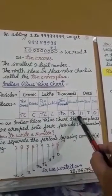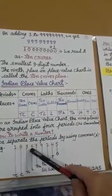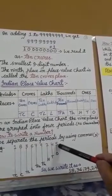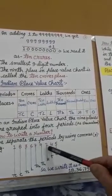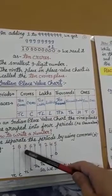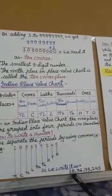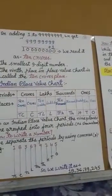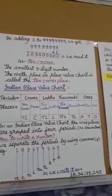Let's understand how to write a number with this example: 1,83,67,9245. Starting from the right: five is ones, four is tens, two is hundreds, nine is thousands, seven is ten thousands, six is lakhs, three is ten lakhs, eight is crores, one is ten crores. We write it as 18,36,79,245 and read it as eighteen crores thirty-six lakhs seventy-nine thousand two hundred forty-five.